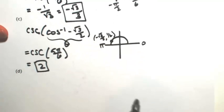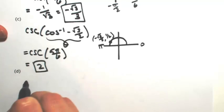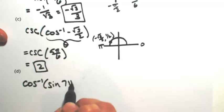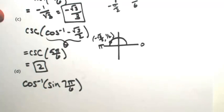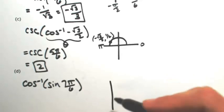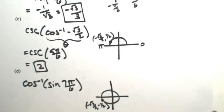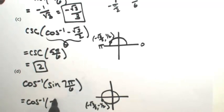Let's try one more — this time with the inverse on the outside. Let's do the inverse cosine of the sine of seven pi over six. The sine of seven pi over six: seven pi over six gives us the point (-√3/2, -1/2), so the sine is negative one-half.